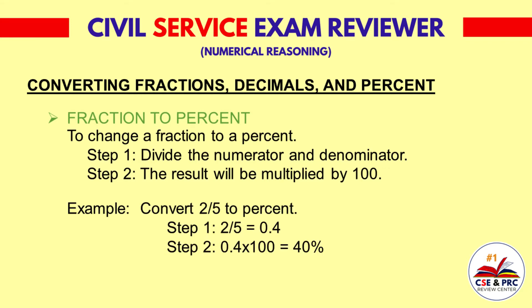Convert 2-fifths to percent. Following the steps, 2 divided by 5 equals 0.4. Then, 0.4 times 100 equals 40%.